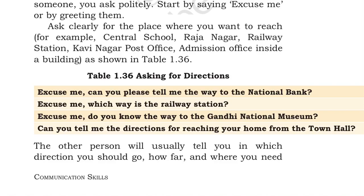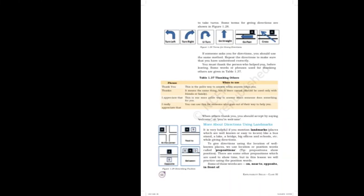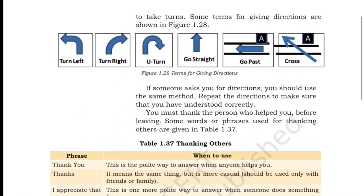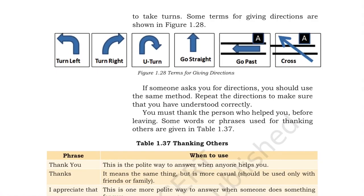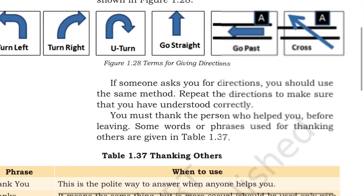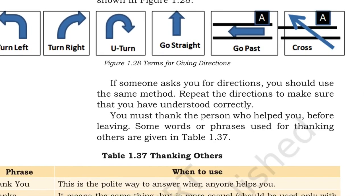दूसरा person जिनसे आप पूछ रहे हो, वो polite way में आपको directions देगा — कि आपको कहाँ जाना है, कितना जाना है, कौन से direction में जाना है, कौन से turns लेनी हैं। जैसे directions देते समय ये terms use होती हैं: turn left, turn right, U-turn, go straight, go past, और cross। आपको यही method use करके directions देनी हैं, और repeat करना है ताकि सामने वाले person को clearly समझ आए।